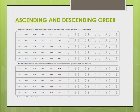Our next topic is ascending and descending order. As we know, ascending order means smallest to greatest. In our first question, which is the smallest number? Yes, you are right.